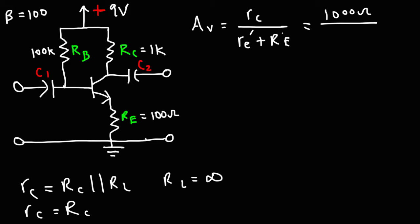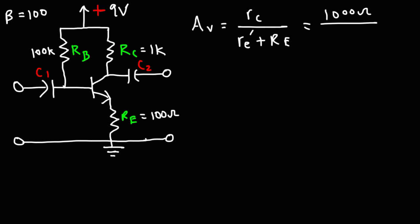Now we have RE. The emitter resistor is 100 ohms. What we need to calculate is the AC emitter resistance. Before we can do that, we need to calculate IE. The AC emitter resistance is equal to 25 millivolts divided by IE. Before we can calculate the emitter current, we need to calculate VE, the emitter voltage with respect to ground. And before that, we need to calculate VB and IB. So let's calculate the base current first.